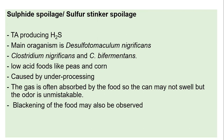Next is sulfide spoilage, also called sulfur stinker spoilage. The organisms involved produce hydrogen sulfide. The main organisms are Desulfotomaculum nigrificans, Clostridium nigrificans, and Clostridium bifermentans.